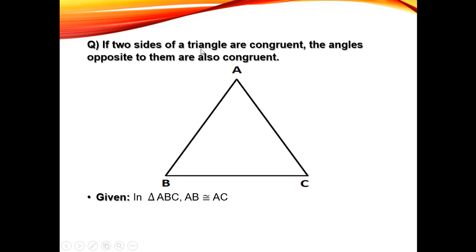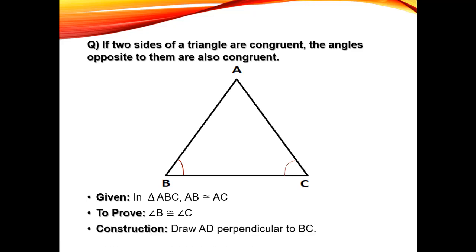When two sides are congruent, then the triangles are congruent — we have to prove that angle B and angle C are congruent. We have to do some construction: we need to draw a perpendicular to BC.